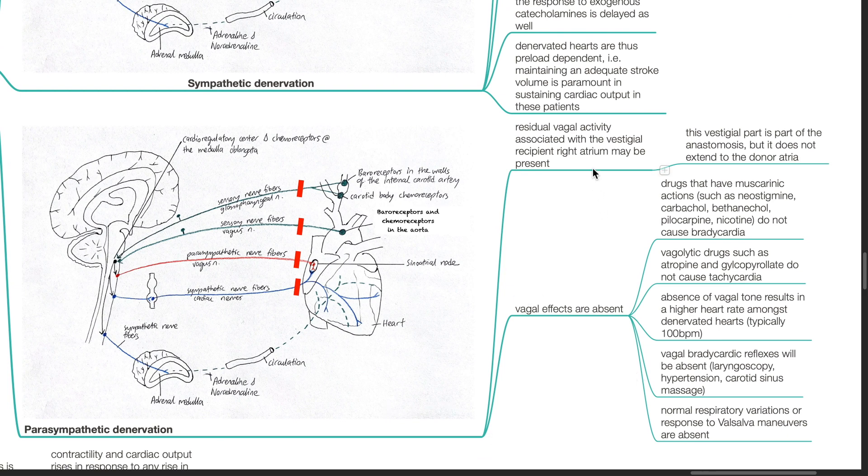Parasympathetic denervation. Residual vagal activity associated with the vestigial recipient right atrium may be present. Vagal effects are absent. Drugs that have muscarinic action such as neostigmine, carbachol, bethanechol, pilocarpine and nicotine do not cause bradycardia.